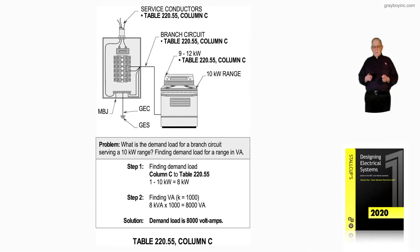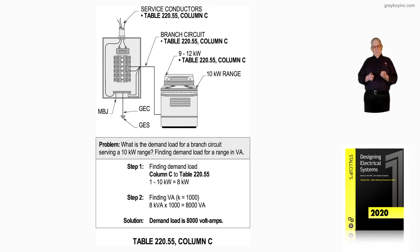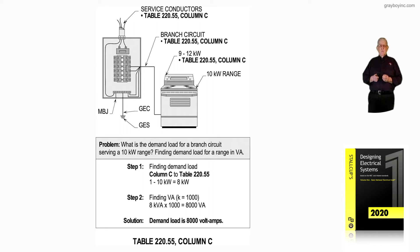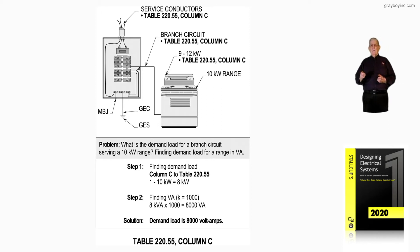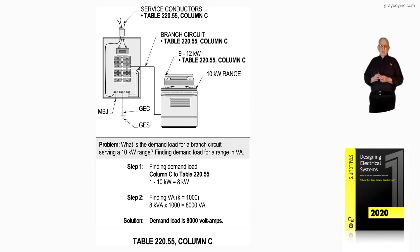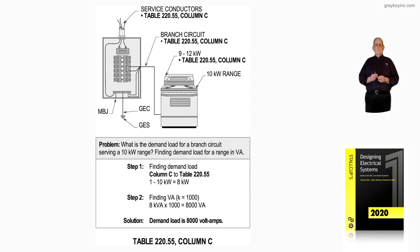We're still dealing with ranges, and this illustration covers the use of Table 220.55, Column C. Notice we have a 9 to 12 KW range here — over 8.75 up to 12 KW, not over 12 — and you can see that's a 10 KW. So as long as we fall within that range, over 8.75 KW up to 12, we can apply the question: what is the demand load for a branch circuit serving a 10 KW range? Find the demand load in VA.